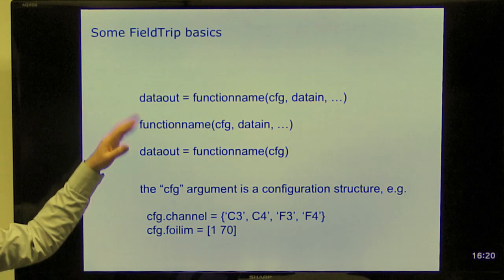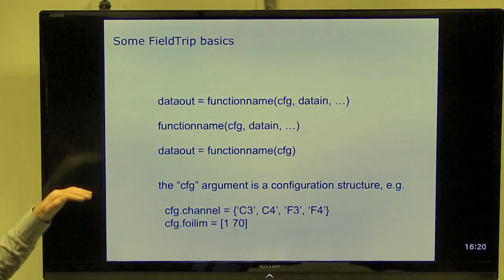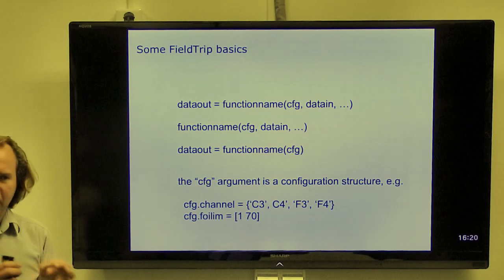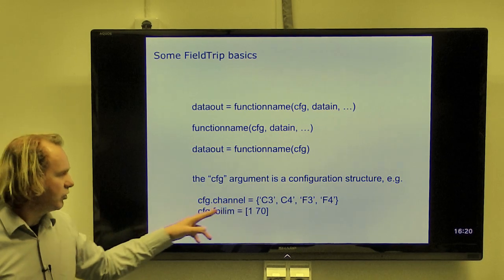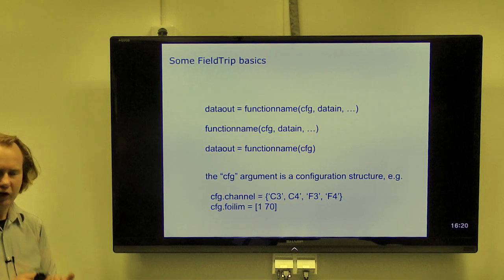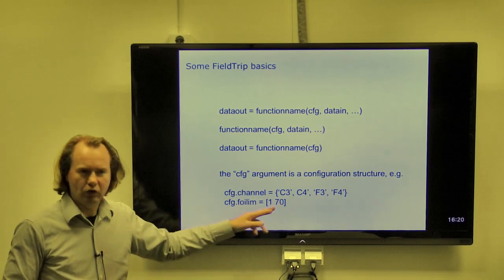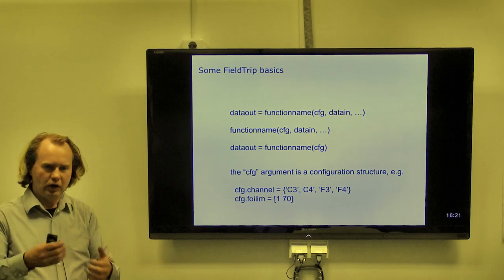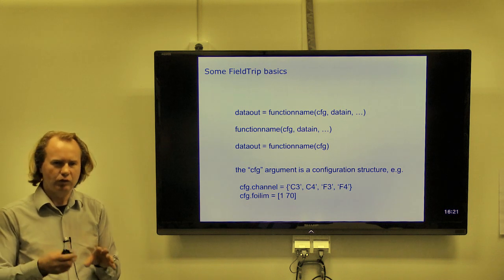The configuration argument, which is identical in all the functions, although not shared, like every function has its own configuration structure. That's a standard MATLAB structure. And what we try to do is make it as human readable as possible. So we give it fields that mean something and we try to use also values for those fields that are meaningful. So we use channel names, not channel numbers. We use frequency, frequency of interest limits that are expressed in hertz, not in frequency bins. We use time in seconds, not in samples. So wherever possible we try to use meaningful names in a configuration structure.